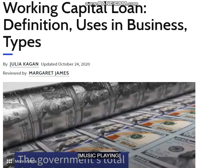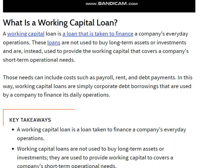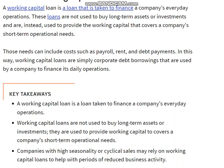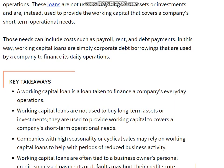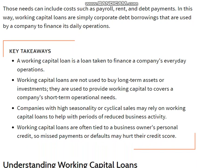Working capital loans: definition, uses in business, and types. A working capital loan is a loan taken to finance a company's everyday operations. These loans are not used to buy long-term assets or investments; instead, they are used to provide working capital that covers a company's short-term operational needs, such as payroll, rent, and debt payments. In this way, working capital loans are corporate debt borrowings used by a company to finance its daily operations.